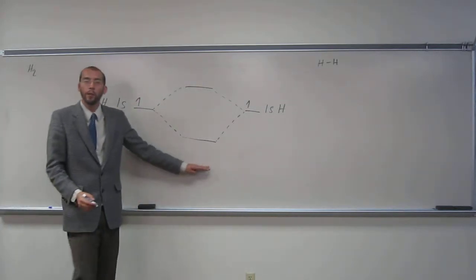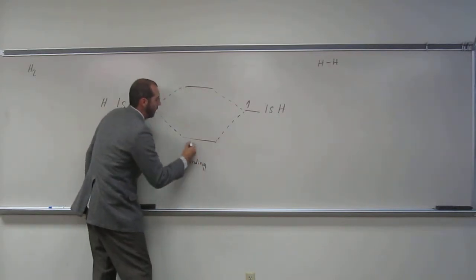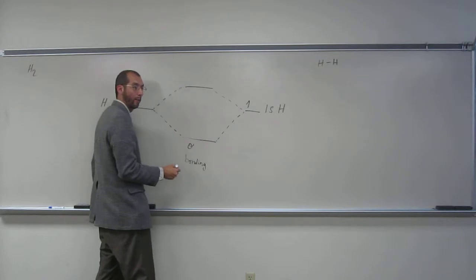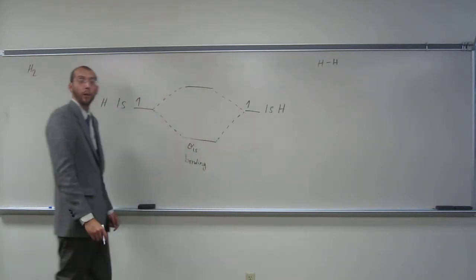Okay, so the bottom one's called the bonding orbital, and remember that sigma bond is made first, right? So sigma, we call it sigma 1s orbital.